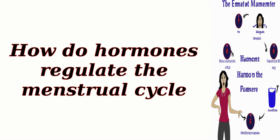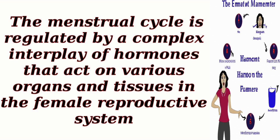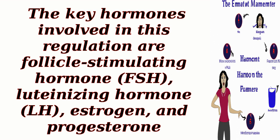How do hormones regulate the menstrual cycle? The menstrual cycle is regulated by a complex interplay of hormones that act on various organs and tissues in the female reproductive system. The key hormones involved in this regulation are follicle-stimulating hormone FSH, luteinizing hormone LH, estrogen, and progesterone.